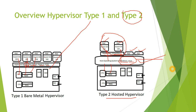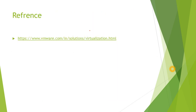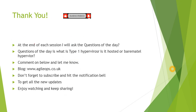The bare-metal Type 1 hypervisor is the best choice for production environments. With that, we'll finish today's topic. Thank you for watching. At the end of each session I'll ask a question of the day — today's question is: What is a Type 1 hypervisor — is it a hosted hypervisor or a bare-metal hypervisor? Comment down below and let me know. My blog is agileops.co.uk — subscribe there to get the latest posts.